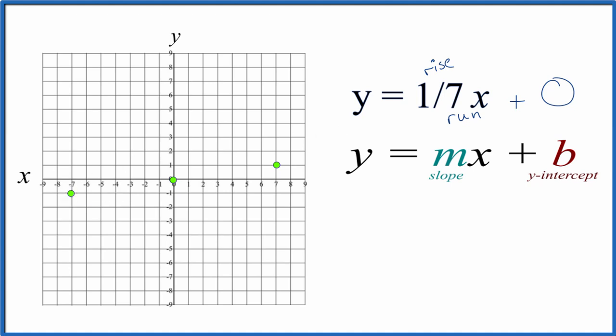Now we have these three points. Let's put a line through this. Then we'll put arrows to show that it goes to infinity, and that is the graph for the linear equation, y equals one-seventh x.